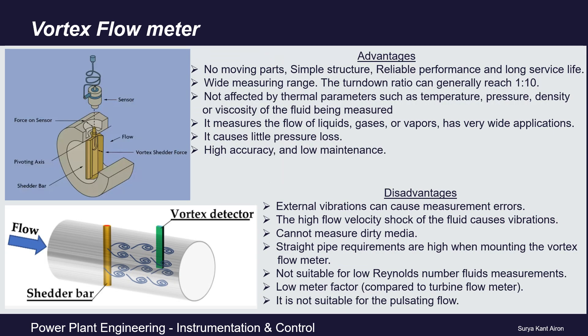Vortex flow meters use an obstruction — called a bluff bar — placed in the fluid flow path to generate vortices. A detector is installed to measure the vortices generated due to the presence of this obstruction. The number of vortices generated are directly proportional to the fluid velocity and thus to the fluid flow rate.